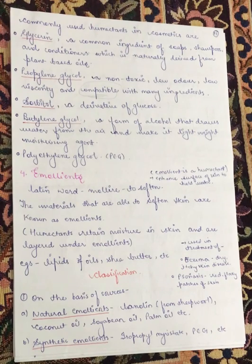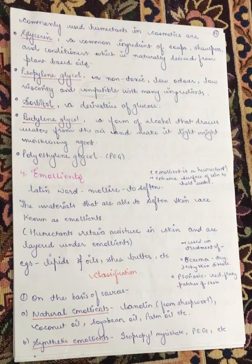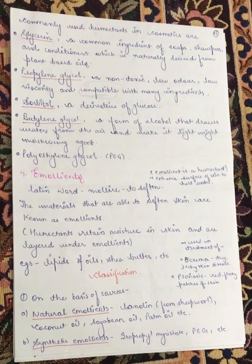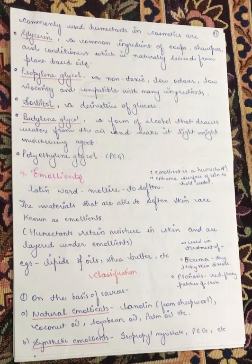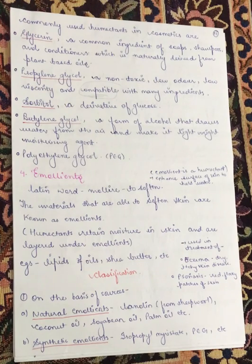Emollients are used in the treatment of eczema, dry and itchy skin, and psoriasis — that is red, flaky, and patchy skin. When there is very dry skin, we use these to prepare formulations. However, for oily skin, they can be disastrous by clogging pores. So we need to be careful. Oils and shea butter are used to prepare products for people with dry skin.